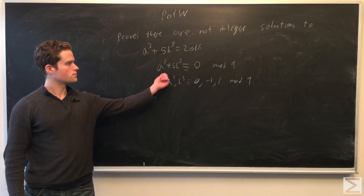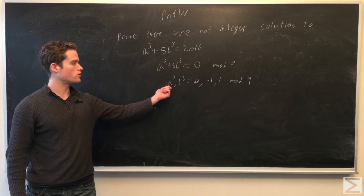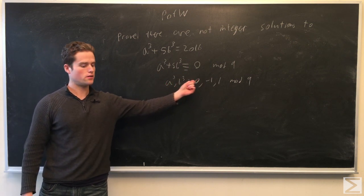First, we want to note that modulo 9, a³, cubes are congruent to 0, -1, or 1 modulo 9.